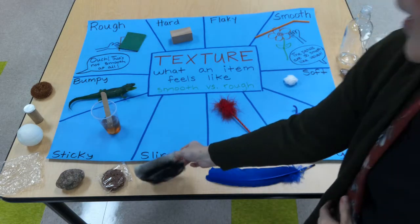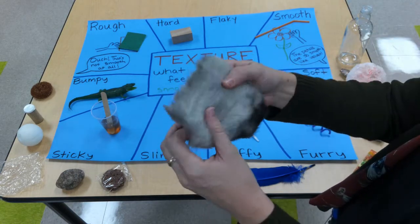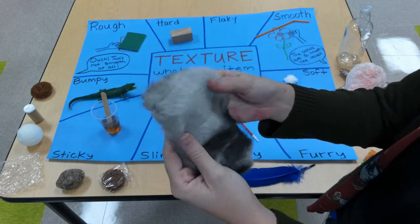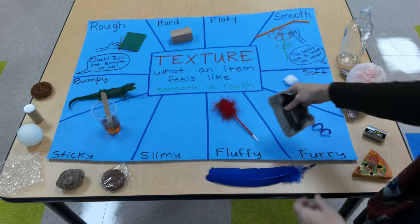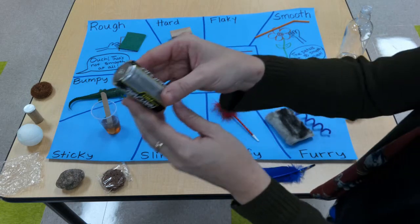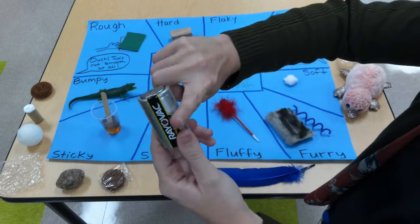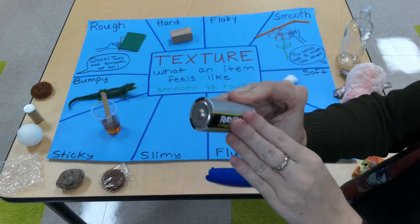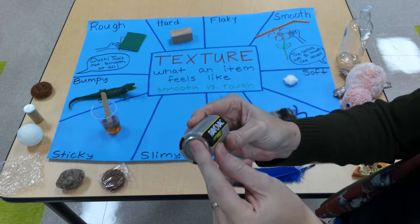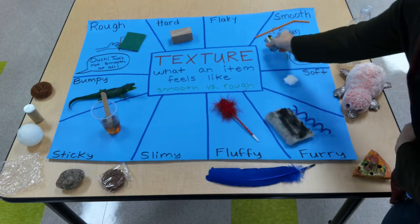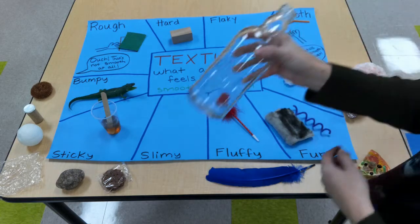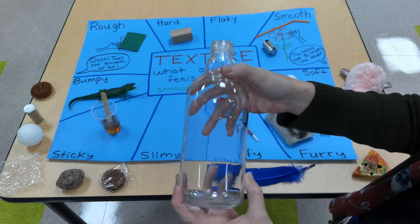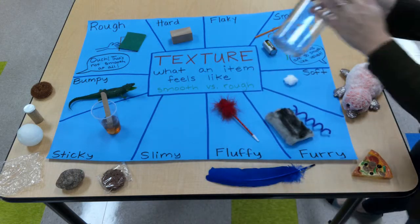If I grab this fur piece right here, even though it's very soft, I'm going to classify or label it as furry. How about my battery? If I rub my finger on the outside of the battery, it's very, very smooth, even though there's a bumpy piece right here, so I'm going to label that as smooth. My glass bottle is very hard and smooth.